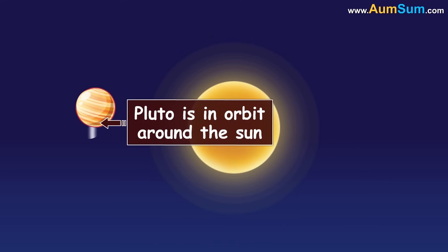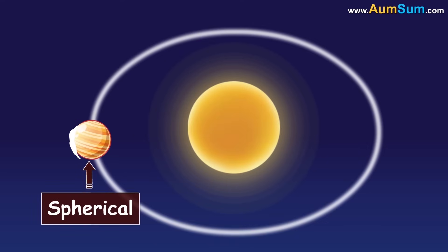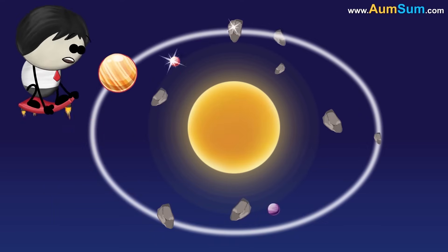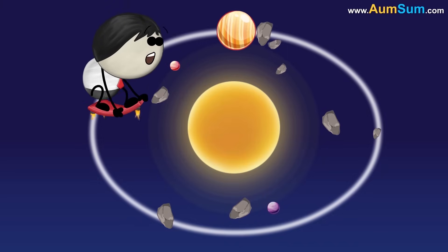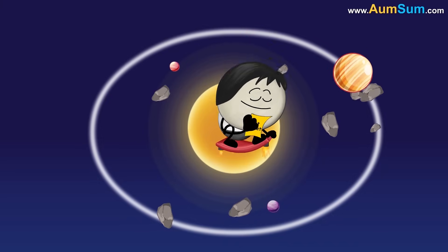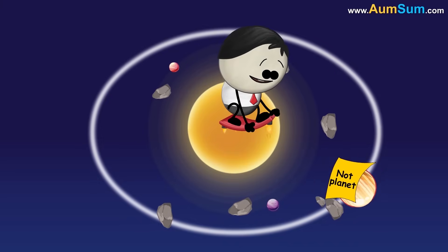Now, Pluto is in orbit around the sun and is spherical in shape. But since Pluto's neighborhood has many other objects and it has not cleared its neighborhood, it is not called a planet anymore.